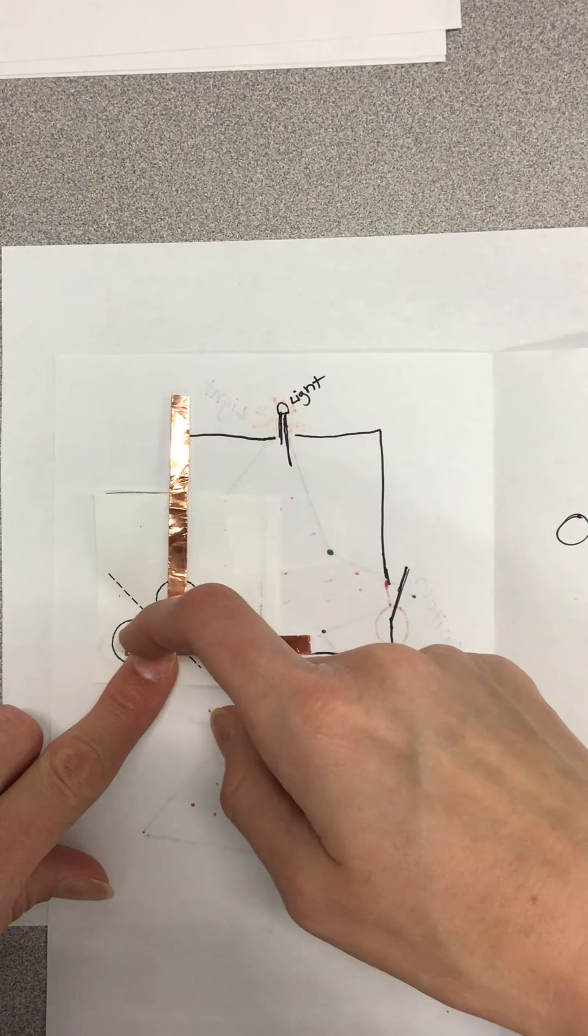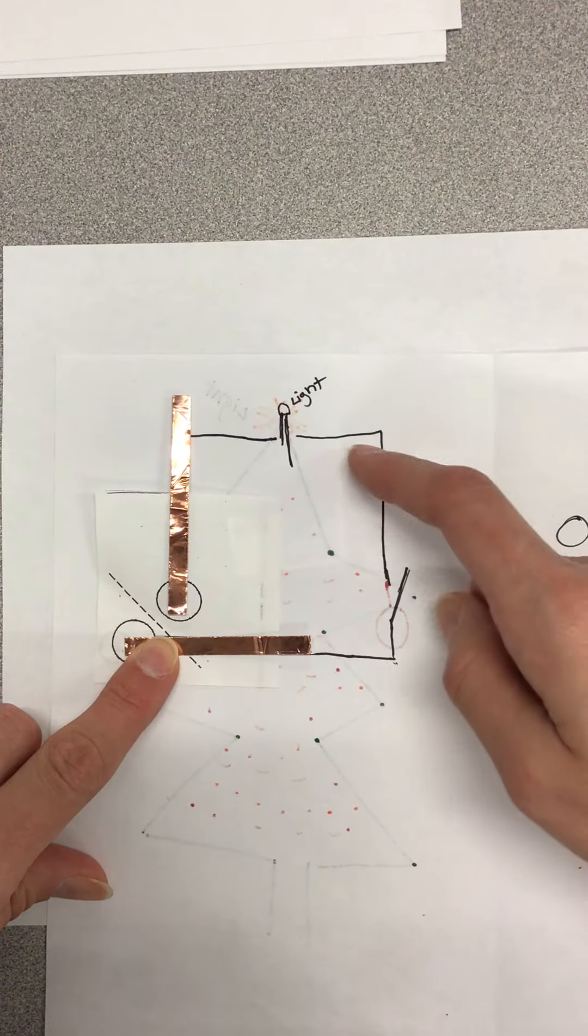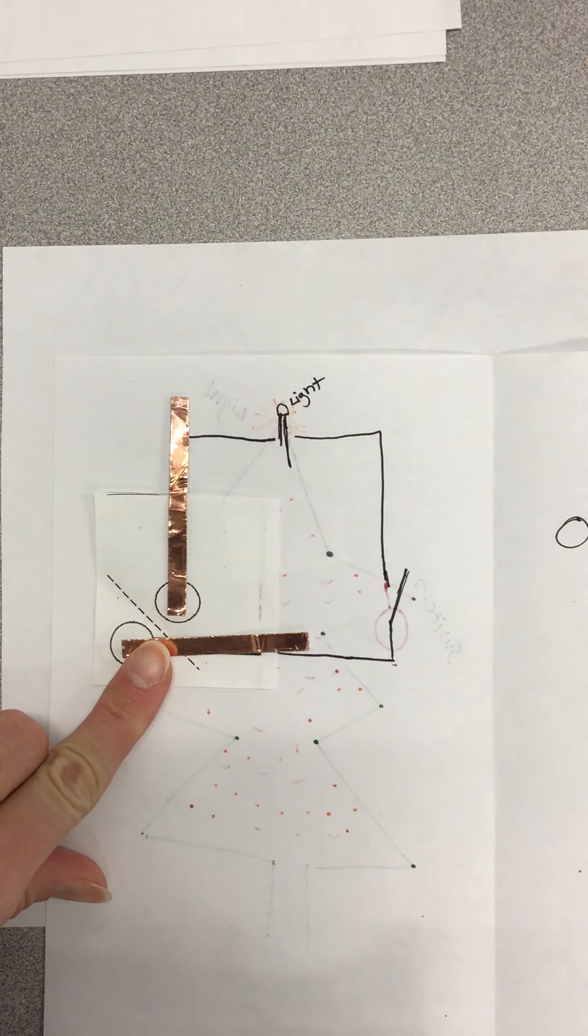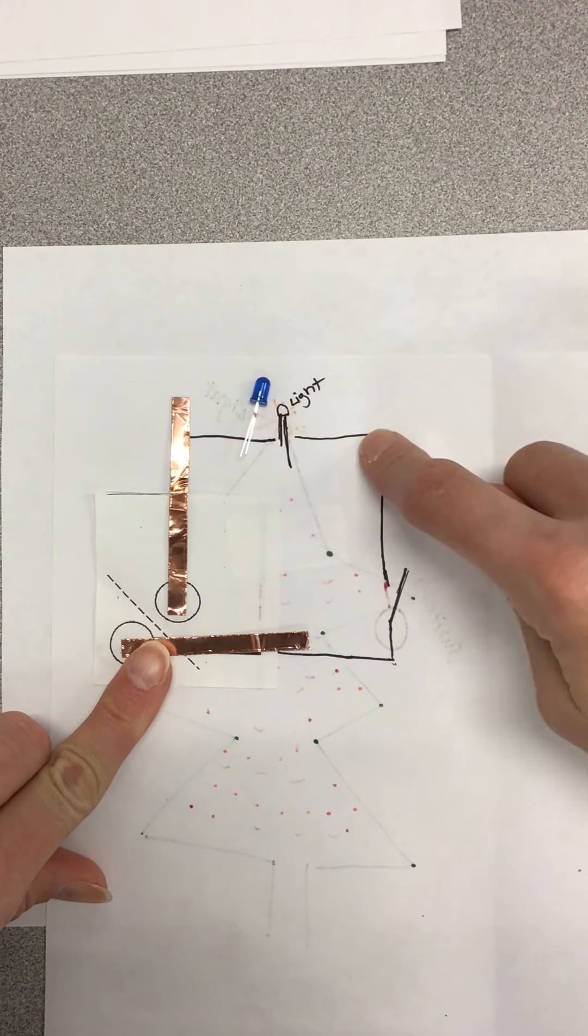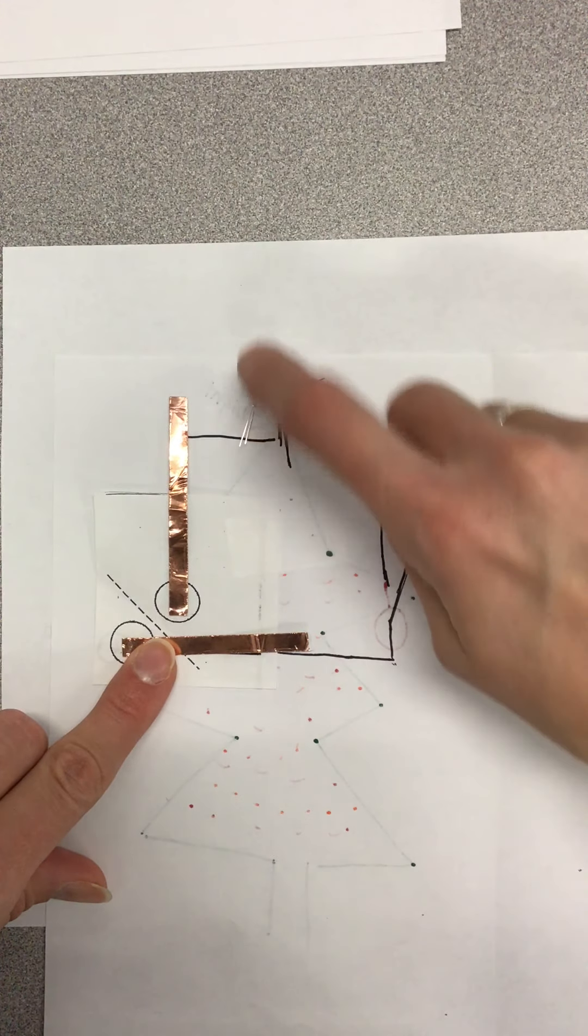In this case, remember this is your plus sign. So when you go around on your LED light you want your long prong to be like that, and I'll show you how to do that in just a second.